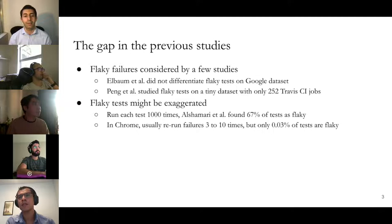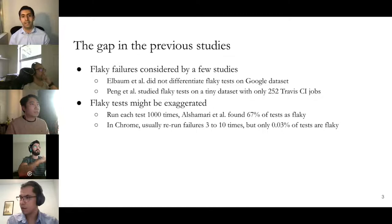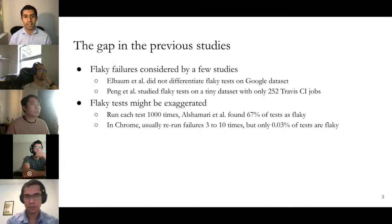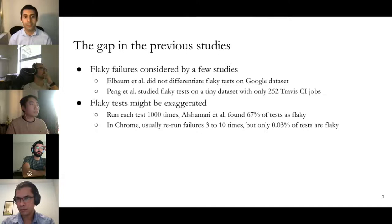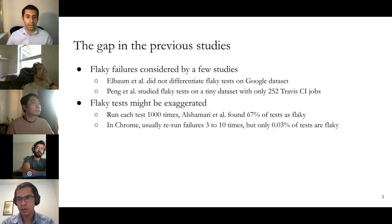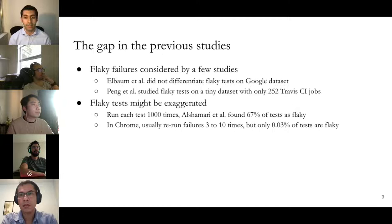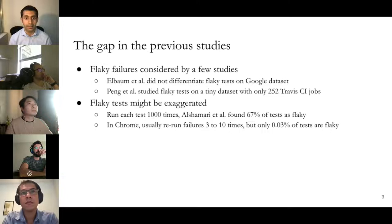The gap in previous studies was that only a few considered flaky failures — ALBUM did not differentiate flaky tests on the Google dataset, and Peng et al. studied flaky tests on a tiny dataset with only 252 CI jobs. Another problem is that flaky tests might be exaggerated in previous works — for example, some ran each test a thousand times and found 67 percent of tests as flaky. But in Chrome, tests are only rerun on failure three to ten times and only 0.03 percent of tests are flaky. Running a test thousands of times will eventually break it, which is not how industry identifies flaky tests.